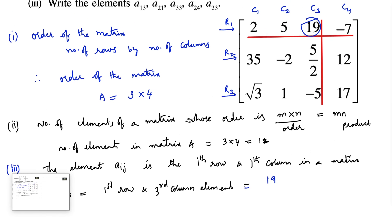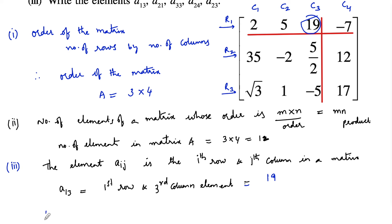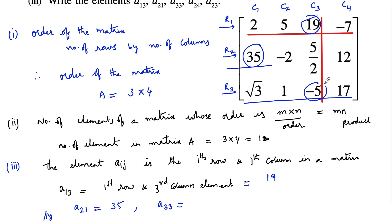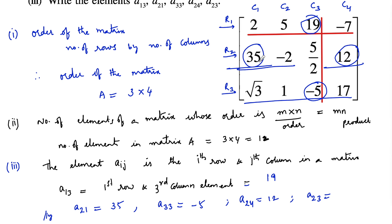Similarly, a21 is the second row, first column element, which is 35. And a33 is the third row, third column element, which is -5. And a24 is the second row, fourth column element, which is 12. And a23 is the second row, third column element, which is 5/2.